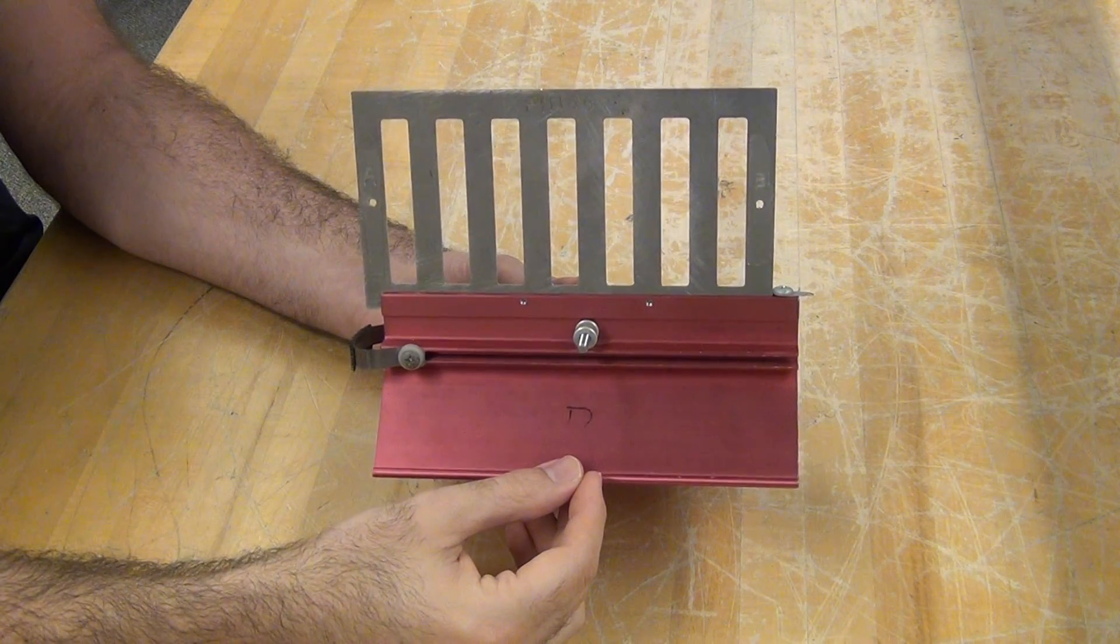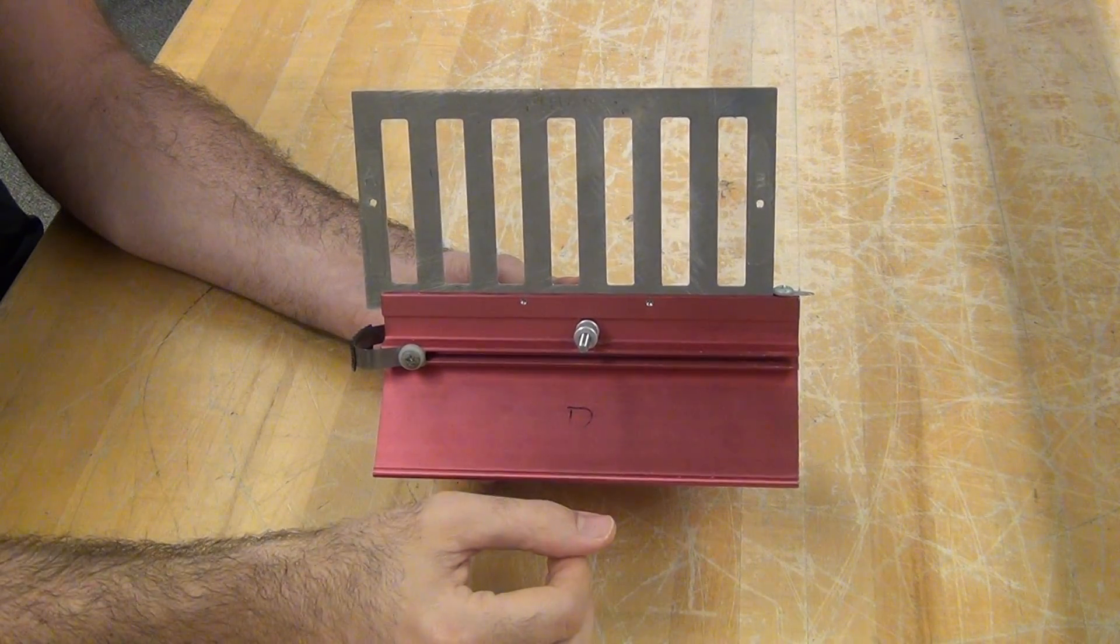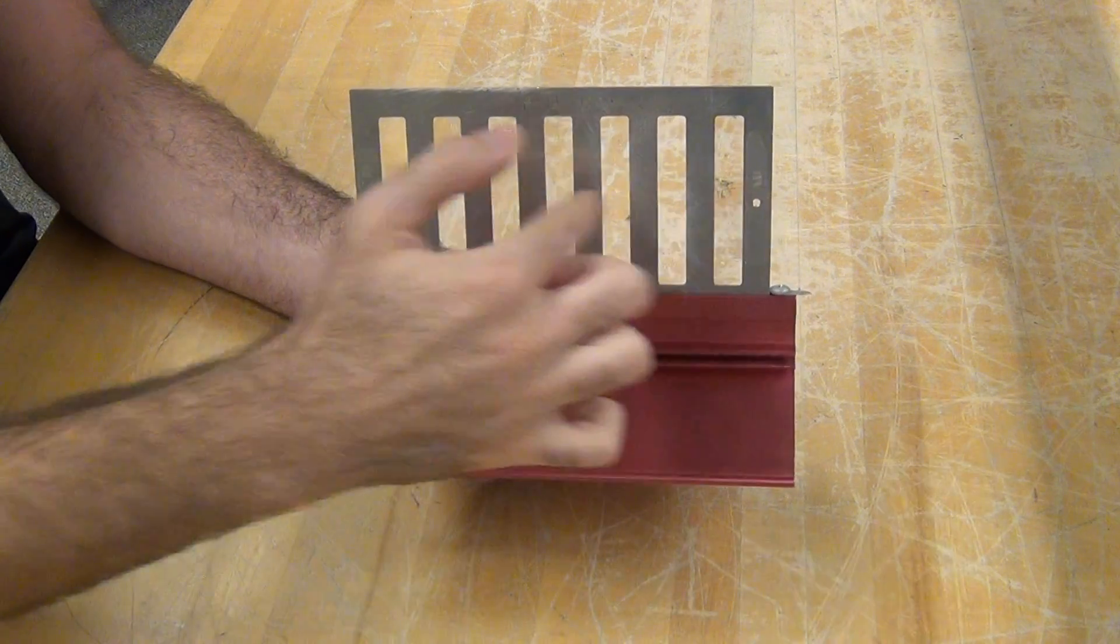This is an AirTrak cart or an AirTrak glider. We'll use these for a lot of our measurements. It has a fence on top.